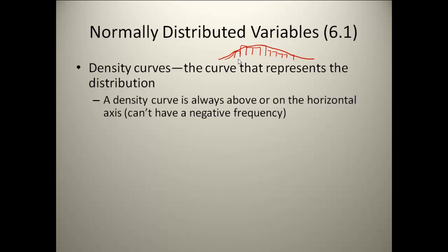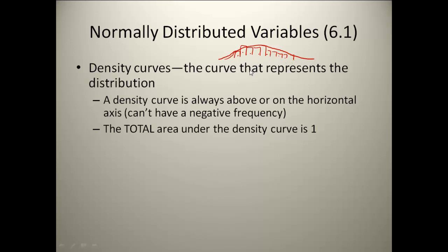A density curve is always above or on the horizontal axis because you can't have a negative frequency. The total area under a density curve is 1, because if you did a frequency histogram, all of these frequencies added together and then divided by your total would give you 1. So if you did a relative frequency, all the decimals would add up to 1, so our area is 1.